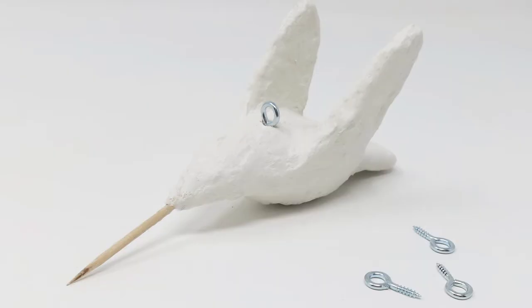Step six, hook. Decide on how the bird should hang and insert an eye hook into the bird's body.